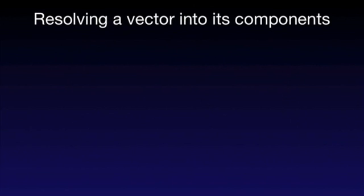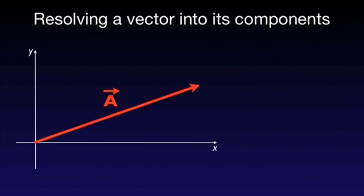Let's consider a vector A and an orthogonal system of axes. That means that the axes are mutually perpendicular. For convenience, the origin of the system coincides with the tail of the vector.